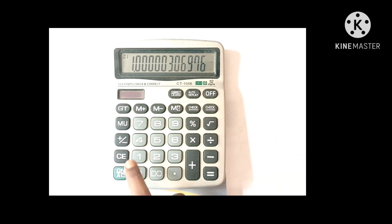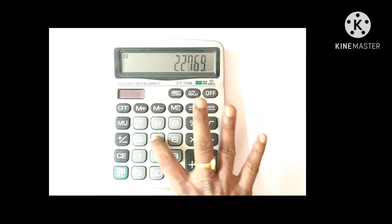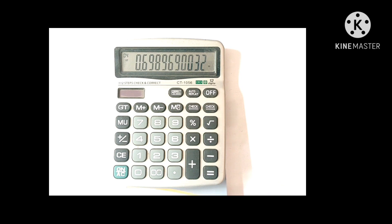2, 2, 7, 6, 9, 5 equals to log 5 value 0.6989. This is the calculation.